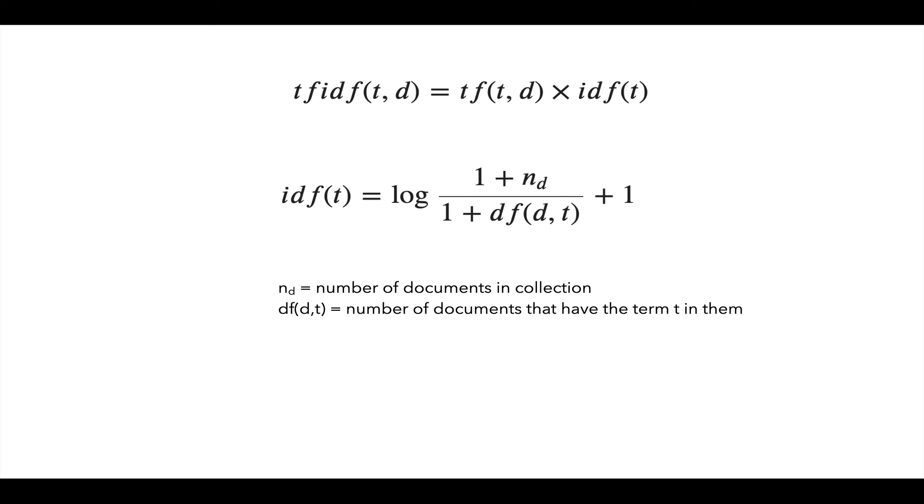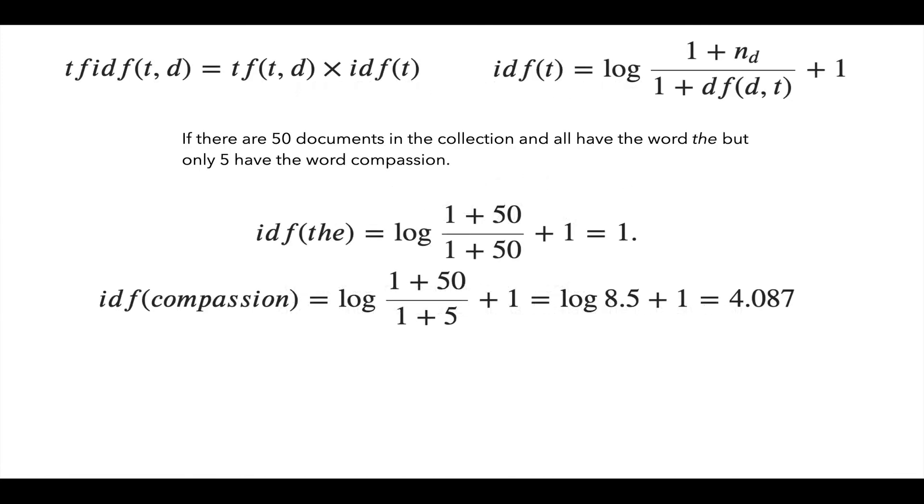That N sub D is the number of documents in the collection. So if you have 50 documents in the collection, that top would be 1 plus 50, like 51. And DF is the number of documents that have the term T in them. So if we're looking at the word 'the', that bottom is how many documents in our collection have the word 'the' in them. Maybe almost all of them, maybe 50 of them have the word 'the' in them. So every document in our collection has 'the'. So it works like this. If there are 50 documents in the collection, and all have the word 'the', that would be the IDF of 'the'. So it's log of 1 plus 50, over 1 plus 50, plus we add 1 there. And that would be 1. And I'm doing log base 2. You can do the traditional log as well.